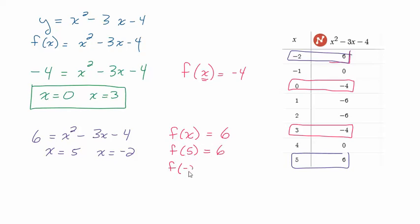In other words, if I input 5, I output 6. f of negative 2 equals 6. If I input negative 2, I output 6. So those are our answers.